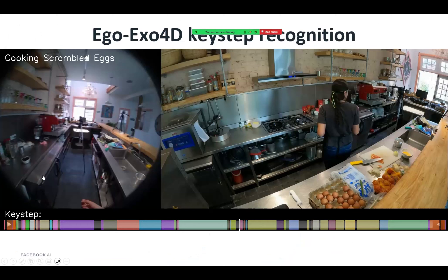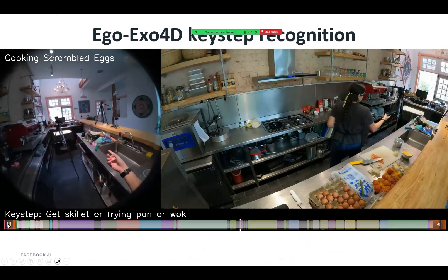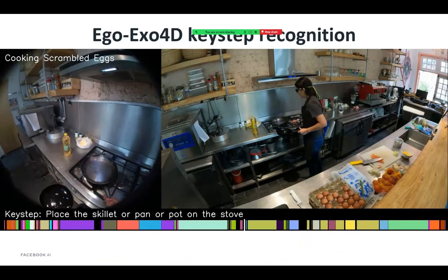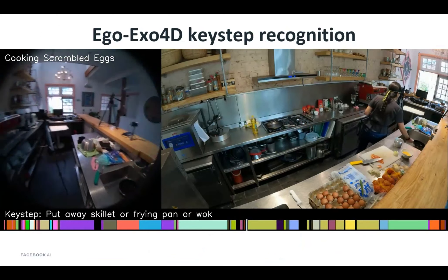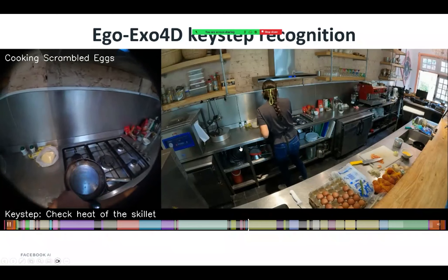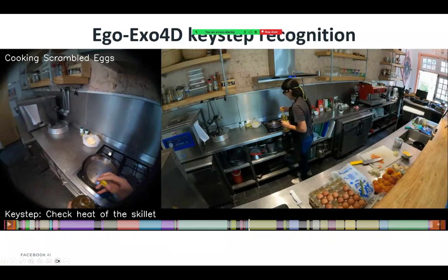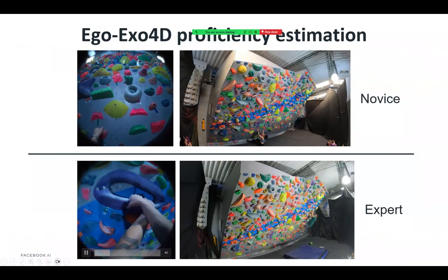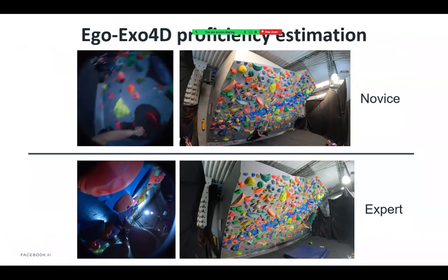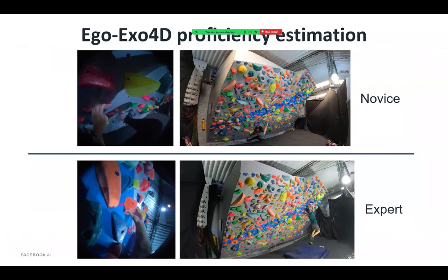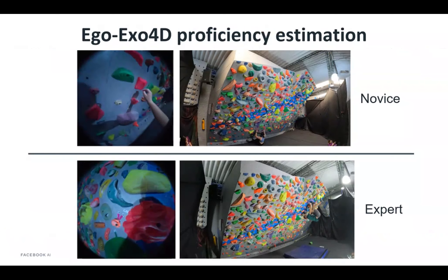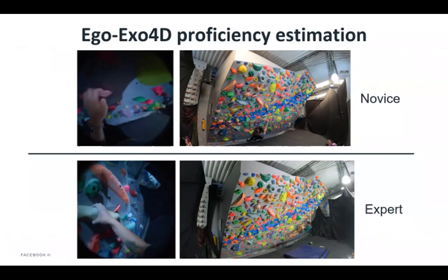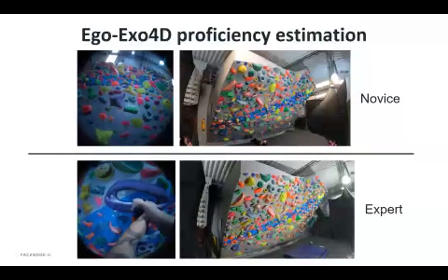For key step recognition, even from the egocentric view alone, the task is to recognize fine-grained labels like 'placing the skillet on the stove' or 'putting away the skillet.' During training, methods may use both ego and exo or just one, but it's tested on the egocentric view alone. For proficiency estimation, you compare novice and expert ego and exo views — for example, from bouldering — and the task asks AI to detect the level of proficiency from the video.